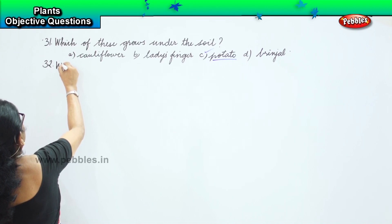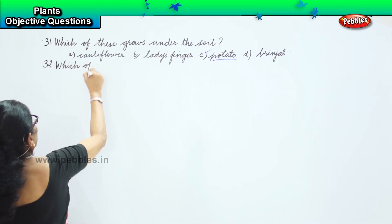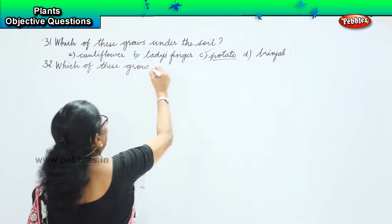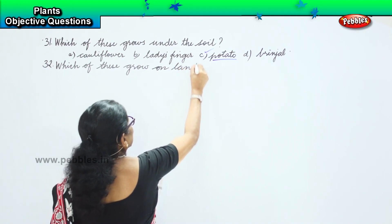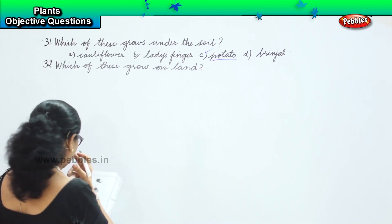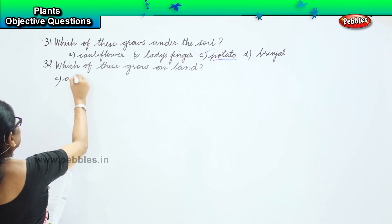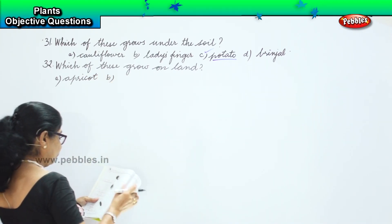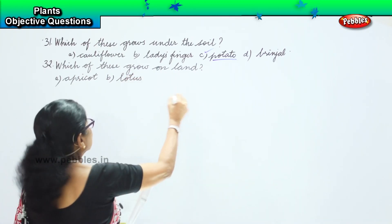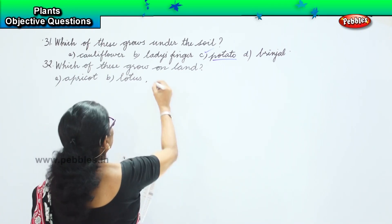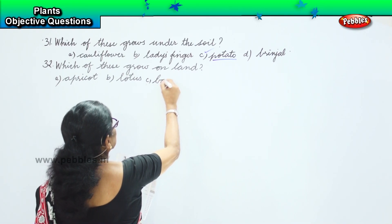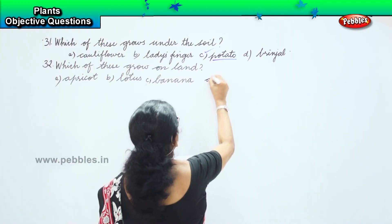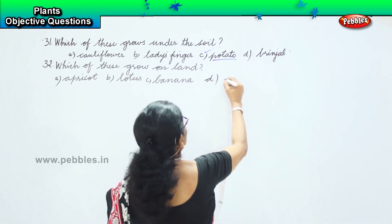Which of these plants grow on land? Option A: apricot. Option B: lotus. Option C: banana. And option D: root.